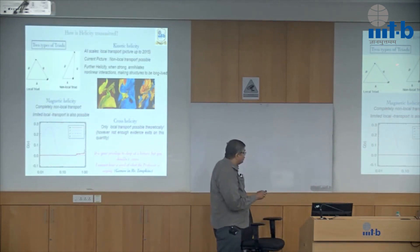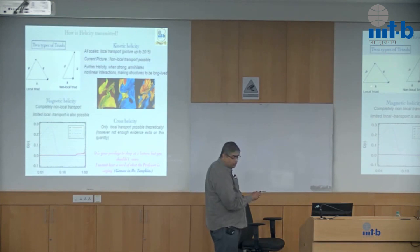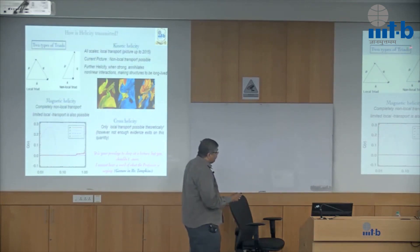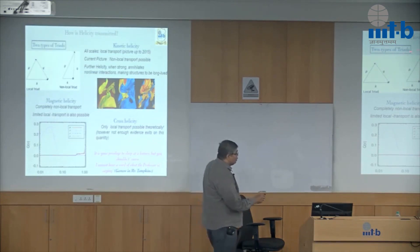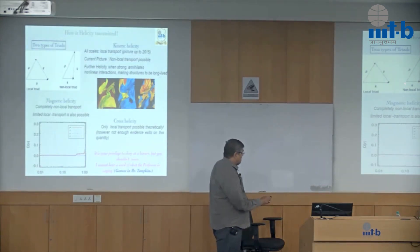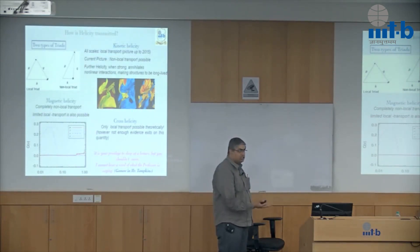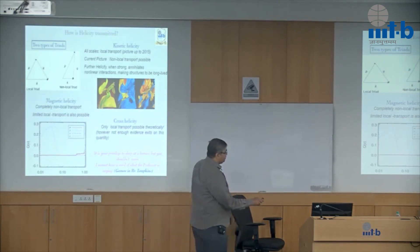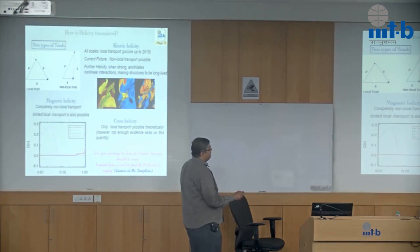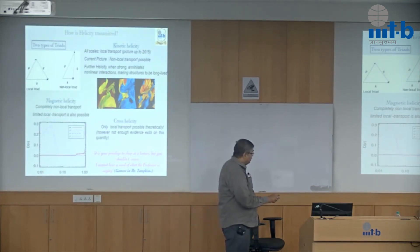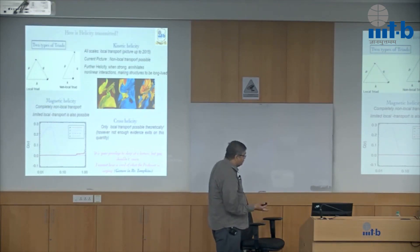We already looked at triads. There are two types: local triads and non-local triads. Local triads are almost equilateral triangles, and non-local triads are scalene or isosceles triangles. We want to know how helicity is transmitted, so we go into Fourier space and understand what kind of triads exist. It was believed until 2015 that only local triads are responsible for the transmission of kinetic helicity, and that when helicity is very strong, it annihilates non-linear interactions, making structures long-lived.